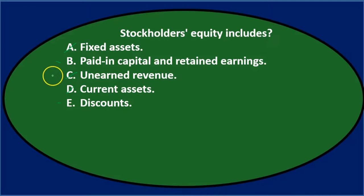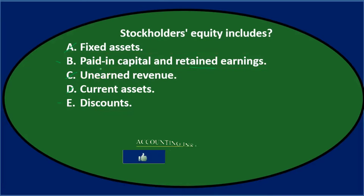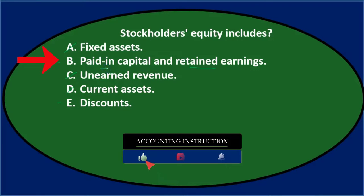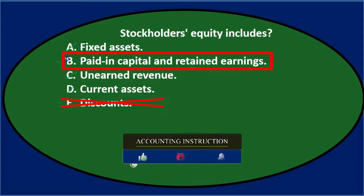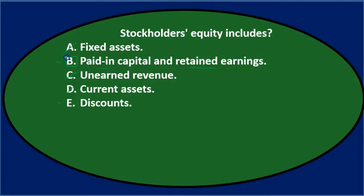Of those two, retained earnings is most familiar because it's clearly in the equity section. Between paid-in capital and discounts, paid-in capital is actually in the equity section, whereas discounts are part of net income which rolls into retained earnings — making that less directly correct. The most correct answer is B: stockholders equity includes paid-in capital and retained earnings.